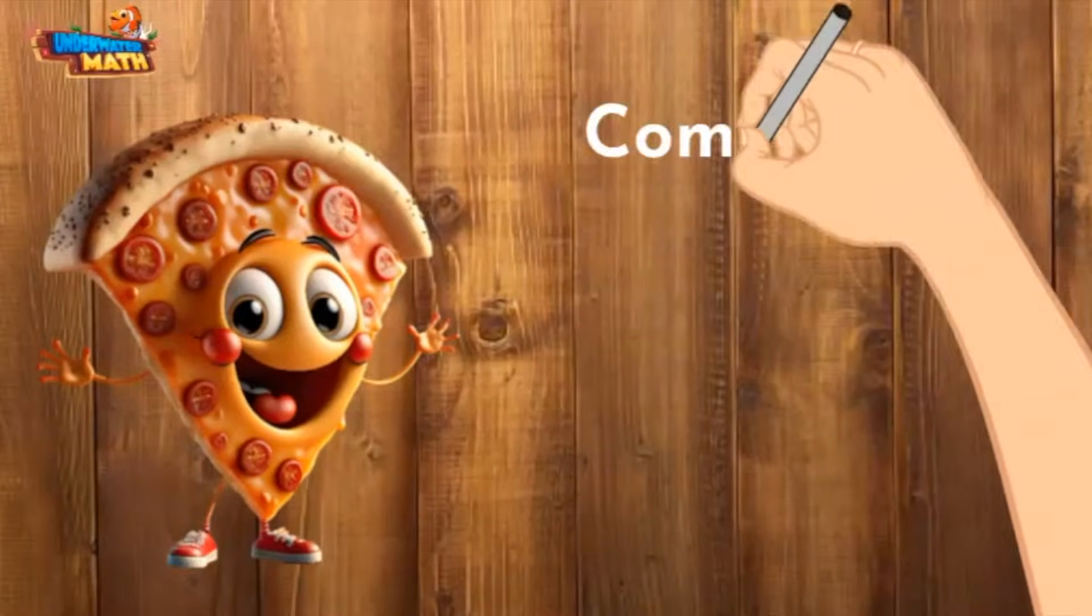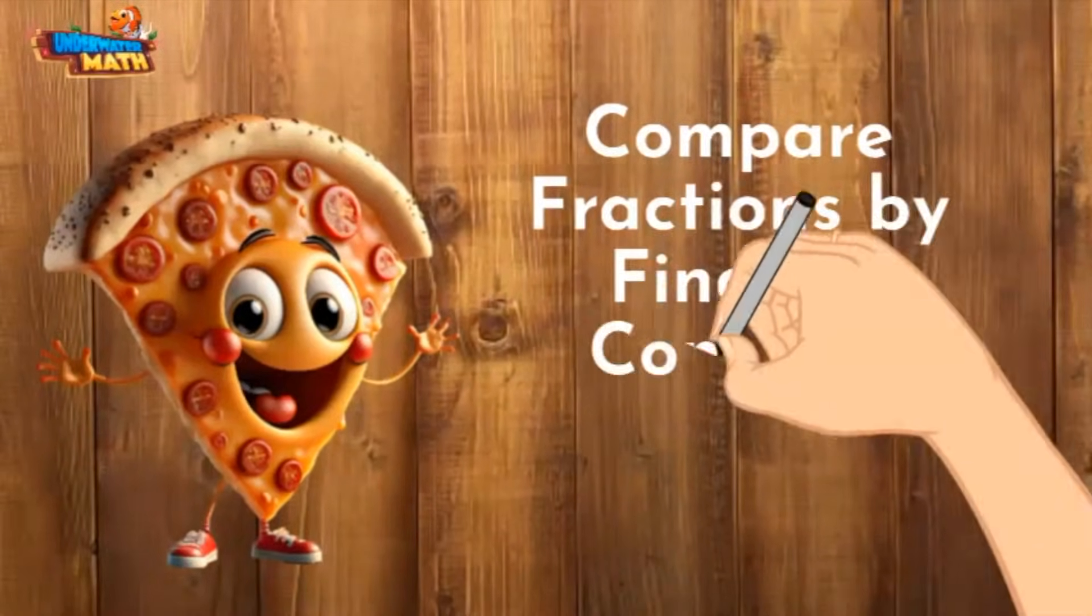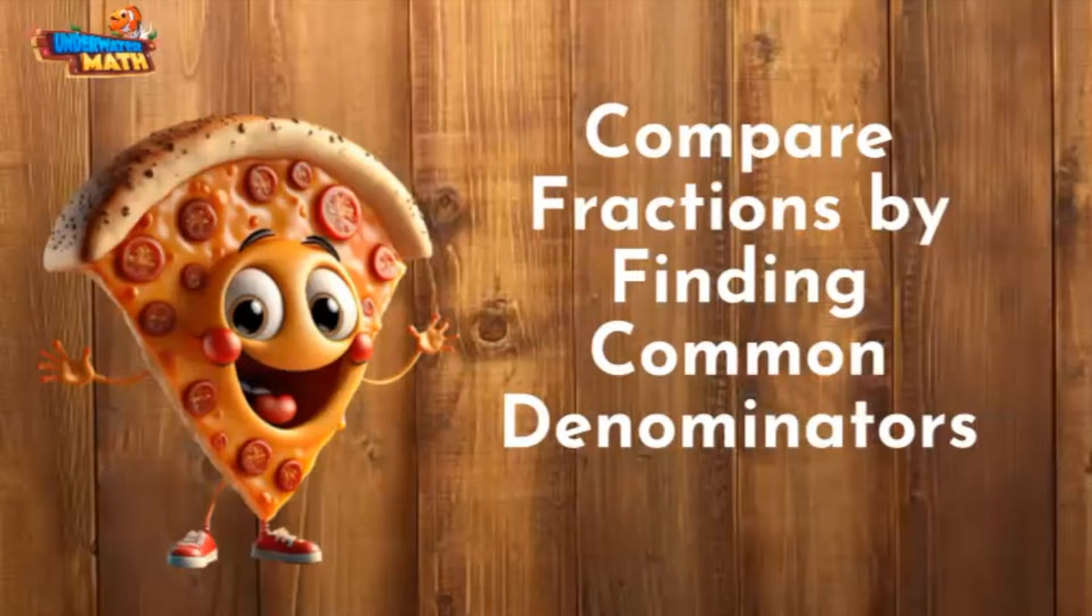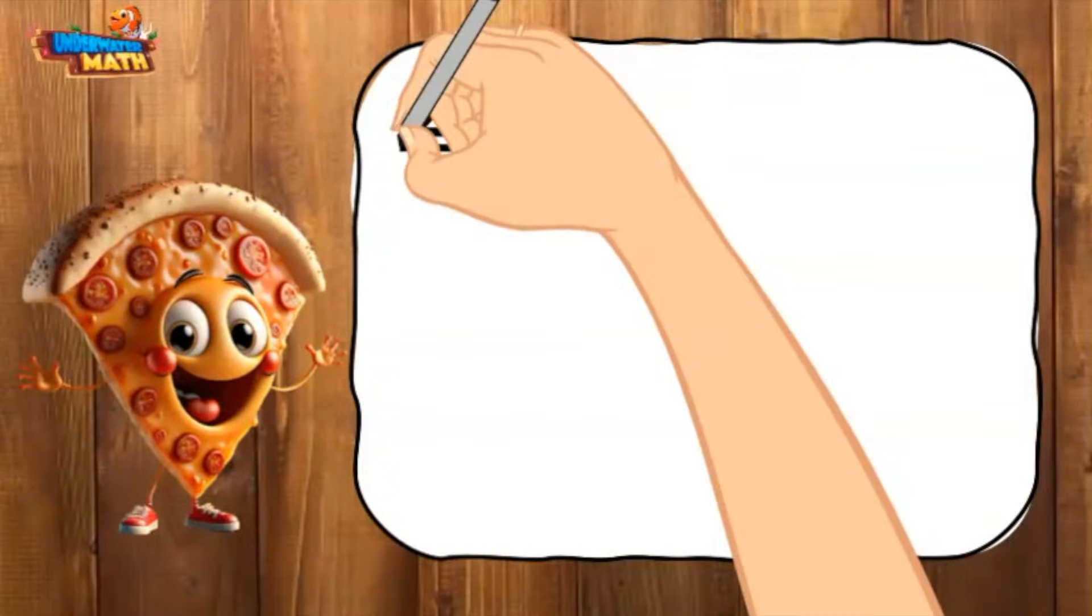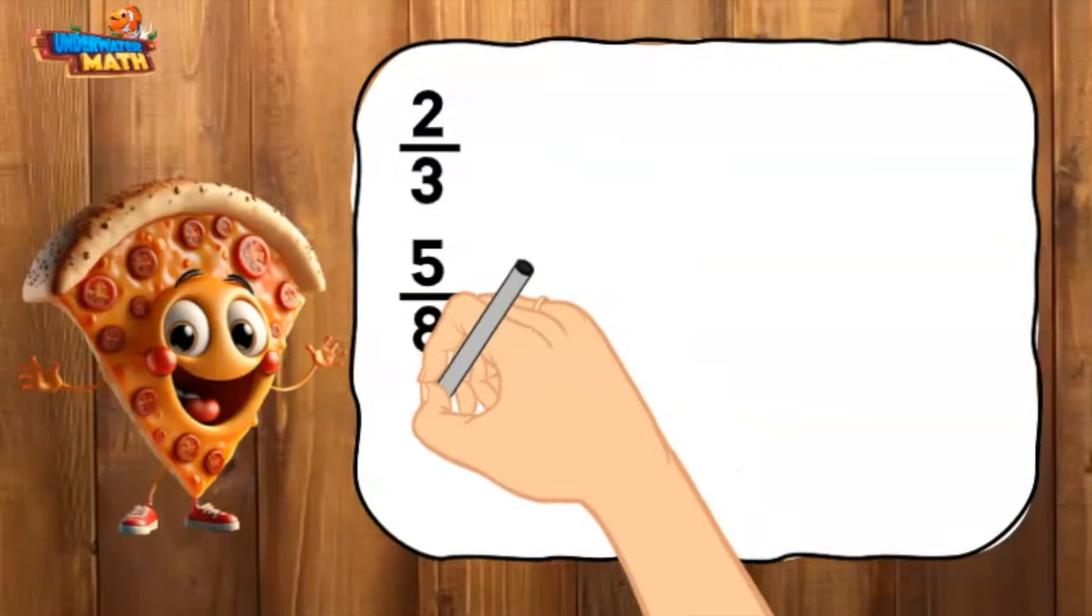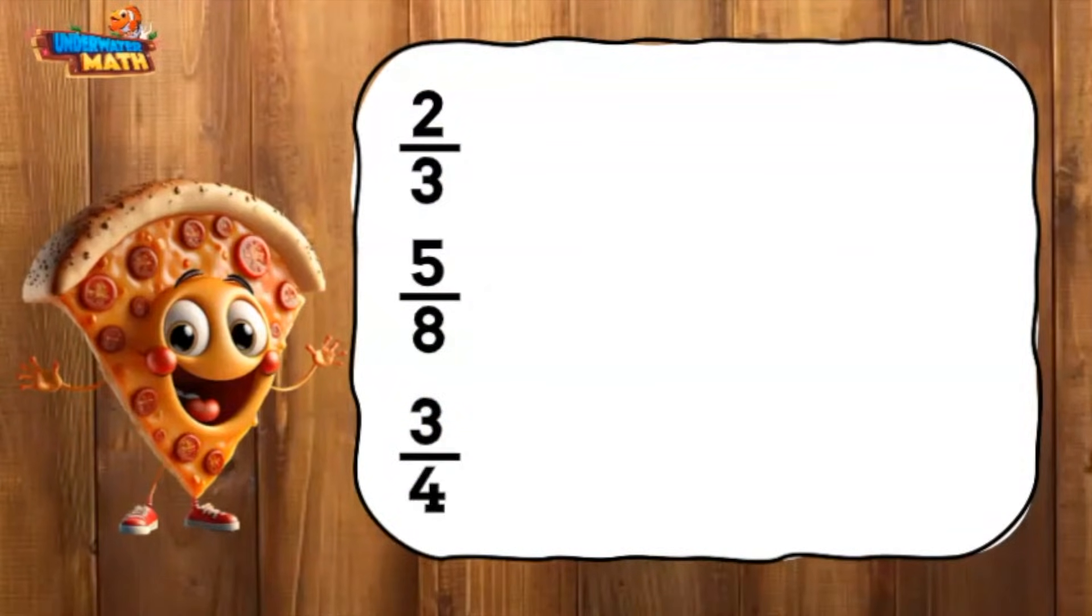Welcome back to underwater math. Today we're going to compare fractions by finding common denominators. Let's compare these fractions: two-thirds, five-eighths, and three-fourths. Since they have different denominators, we need to find a common denominator for all of them.